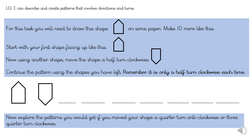For this task, you will need to draw a pentagon shape on some paper — make ten more like this. Pause the video until you've got your ten shapes. Take your first shape and have it facing up. Now, using another shape, move the shape a half turn clockwise. Continue the pattern using the shapes you have left — it is only a half turn clockwise each time. Record your pattern in your blue book or take a photograph. Now explore the patterns you would get if you move your shape a quarter turn anti-clockwise or three-quarter turn clockwise.